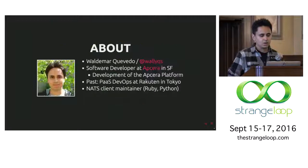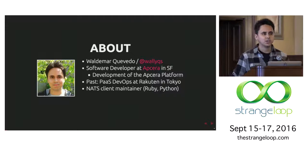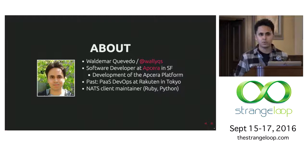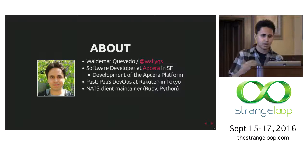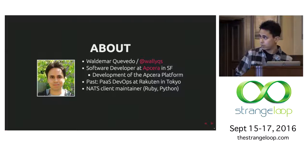A quick introduction about myself. My name is Valdemar Quevedo. You can find me on Twitter and GitHub. I'm a software developer at AppSera based in San Francisco where I do development of the AppSera Trusted Platform, which is an on-container orchestration solution. In the past I was doing development and operations for a platform service at a large e-commerce website in Japan that was based on Cloud Foundry, and that was using NATS as part of its control plane. It became a fairly large deployment, so that's how I became more familiar with doing operations around NATS. I'm also a maintainer of a couple of the client libraries for Ruby, Python 2 based on Tornado, and for Python 3.